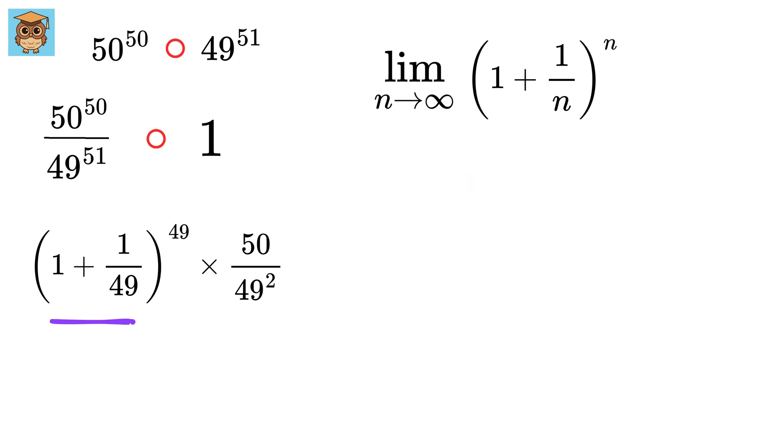What it means is, suppose you use n as 1, then this value becomes 1 plus 1 over 1 whole raised to 1, or it is 2. Then if you use n as 2, then this value becomes 2.25. Then if you use n equals 3, it becomes 1 plus 1 over 3 whole raised to 3, which is nearly 2.37.